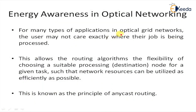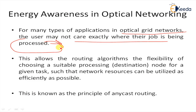For many types of applications in optical grid networks, the user may not care exactly where their job is being processed. For such a scenario, data is transmitted to a particular network through a multi-layer or multi-hierarchy level network, which provides different features. According to these layers, various jobs are defined for performing different tasks, allowing the routing algorithm the flexibility of choosing a suitable processing destination for a given task.